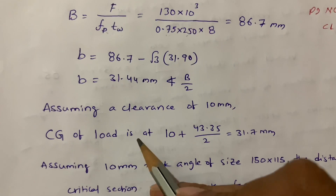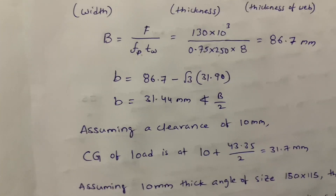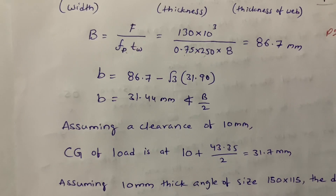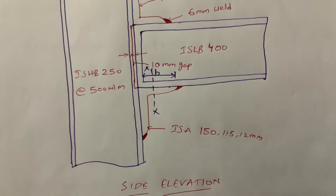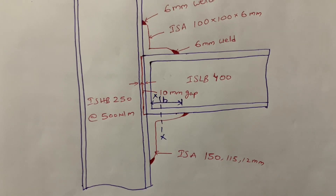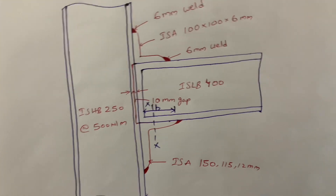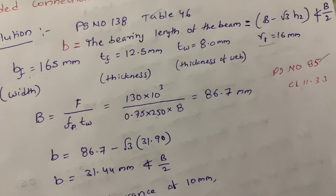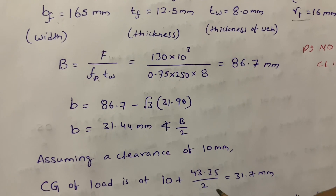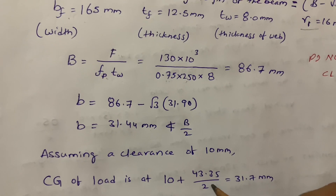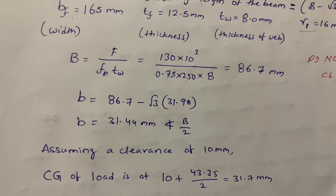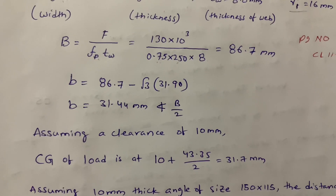Next, we calculate the center of gravity of the load — this is required for every problem. The center of gravity of the load is 10 mm (clearance) plus half of 86.7 mm (which is 43.35 mm), and then half of that value again. So: 10 plus 43.35 divided by 2 equals 31.7 mm.